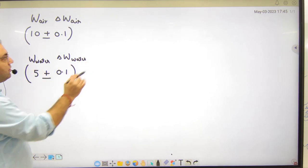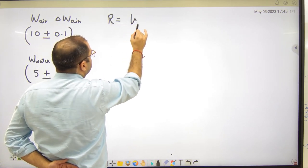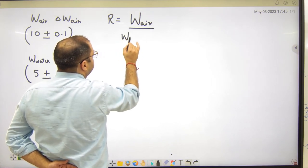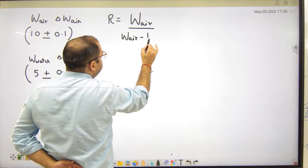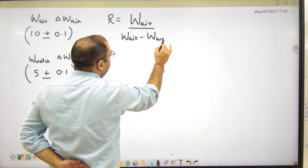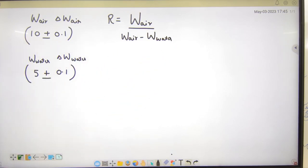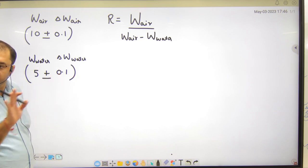5 plus minus kitna? 0.1 again. To isko likh leta hai W water aur ye delta weight in water. Kya hai point clear hai? Kya given hai? Relative density ka formula sun lo. Relative density hai weight in air divided by weight in air minus weight in water. Ye formula use ho na hai. Relative density is ke equal ho ta hai. Thik, ye formula usko dena chahi ghi tha.